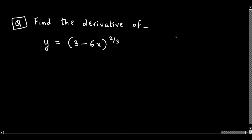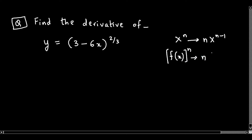This looks like x raised to n. It is of the form x raised to n, but instead of x we have 3 minus 6x. So we have f(x) raised to n. The derivative of f(x) raised to n is n times f(x) raised to n minus 1, multiplied by the derivative of f(x). We also call this the chain rule.